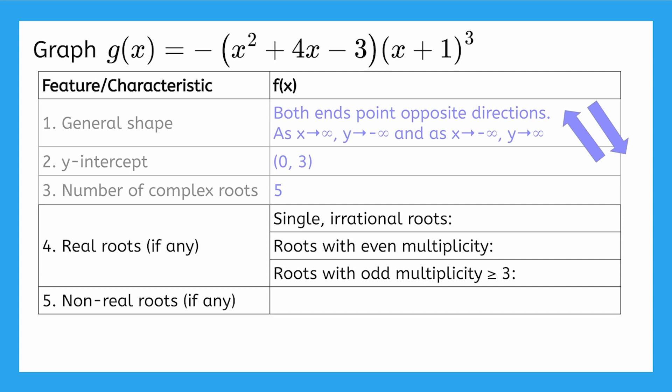So which real roots do we have? To start, we have a real root of negative 1, but it has multiplicity 3, so we'll put that here. I don't have any roots with even multiplicity. And what about this quadratic that I can't factor? We need to use the quadratic formula to know if it contains real, irrational roots or nonreal roots.